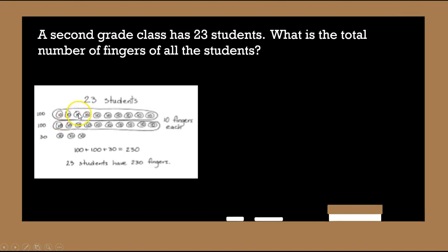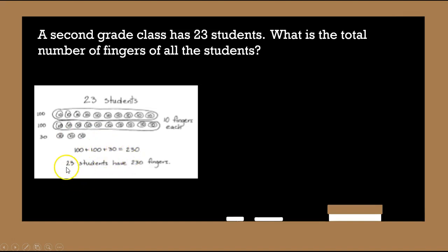Ten, twenty, thirty, forty, fifty, sixty, seventy, eighty, ninety, one hundred. And there are three left over. This is ten tens, this is ten tens, this is ten tens — because there are twenty here. And then there are three tens, so one hundred plus one hundred plus one hundred plus thirty equals two hundred and thirty. Twenty-three students have two hundred and thirty fingers.